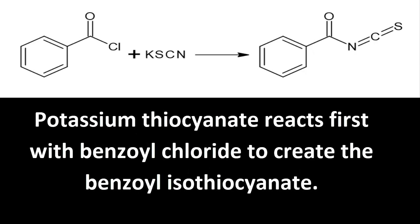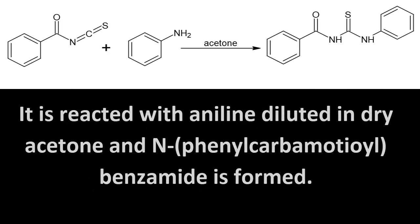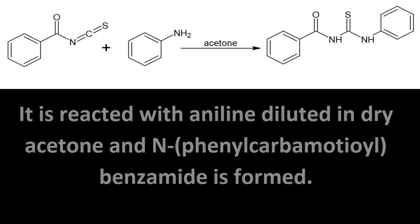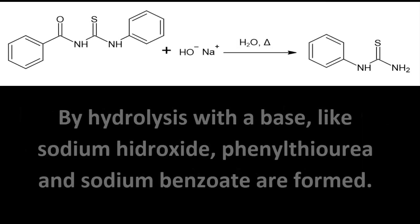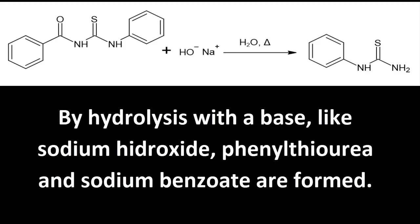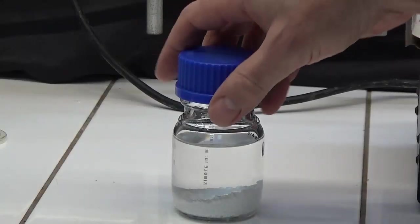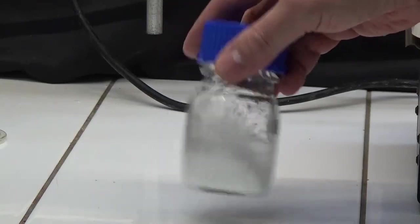Phenylthiourea synthesis is divided into three steps. First, potassium thiocyanate reacts with benzoyl chloride to create benzoyl isothiocyanate. It is then reacted with aniline diluted in dry acetone to form N-phenylcarbamoyl benzamide. Finally, by hydrolysis with a base like sodium hydroxide, phenylthiourea and sodium benzoate are formed.